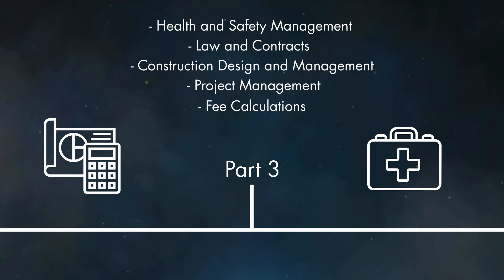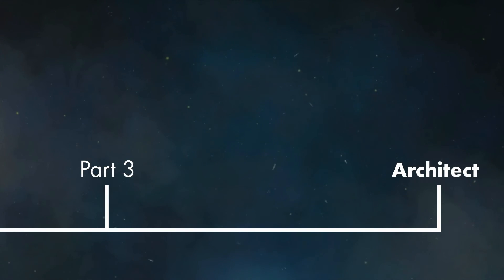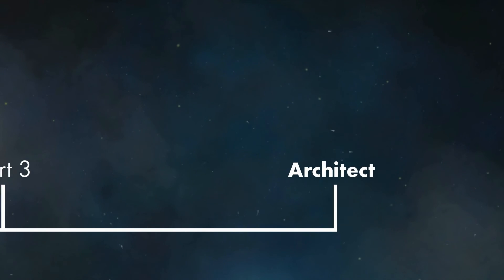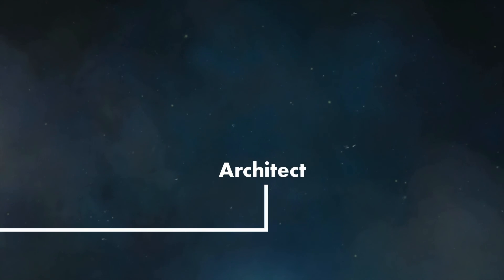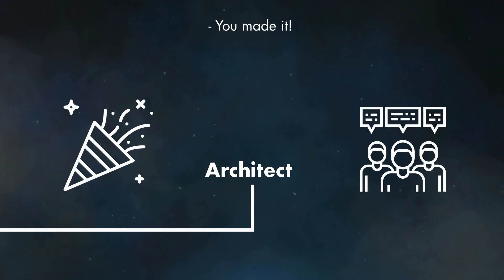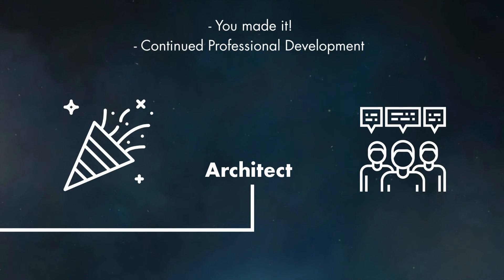The exam takes place over 2 days, and you write your answers in the form of an email, as if you were an architect in an office trying to overcome situations as they arose. Once you've completed this, you then sit an interview with your IBA, and if all goes well and you pass, then congratulations — you have successfully become an architect.